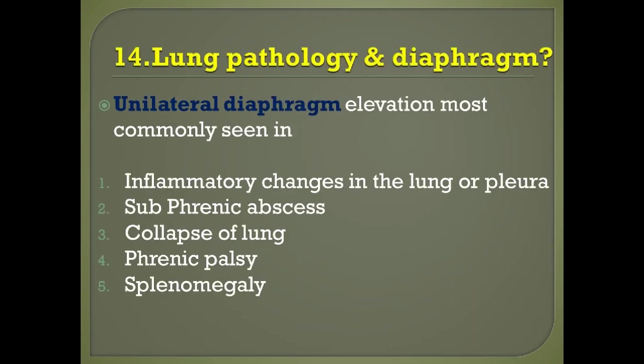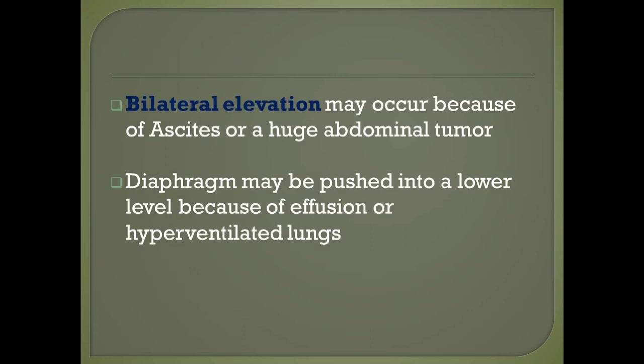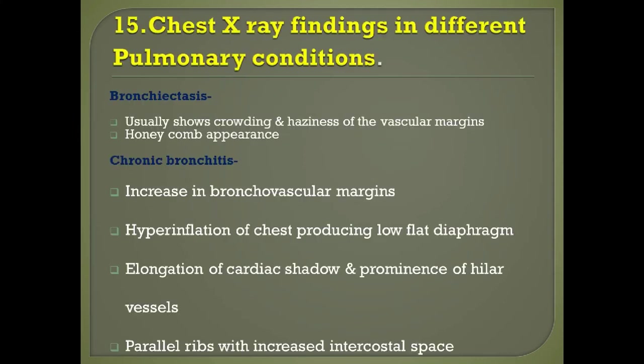Question number fourteen: lung pathology and the diaphragm. If there is unilateral diaphragm elevation, it is most commonly seen in inflammatory changes in the lung, pleural or subphrenic abscess, collapse of the lung, phrenic nerve palsy, and splenomegaly. If there is bilateral elevation of the diaphragm, it may occur because of ascites or a huge abdominal tumor. The diaphragm may be pushed to a lower level because of effusion or hyperinflated lungs.